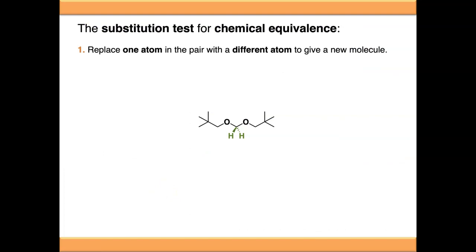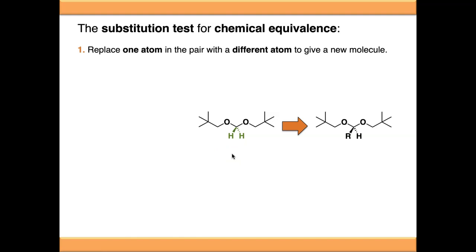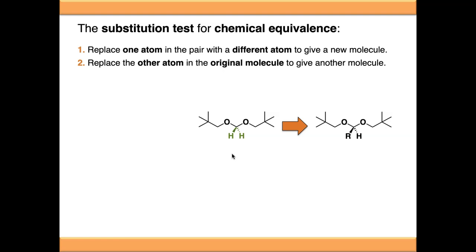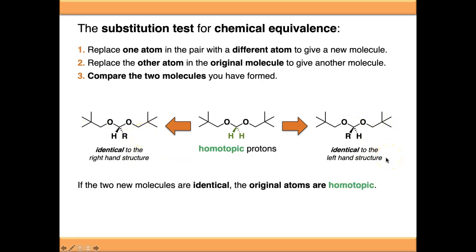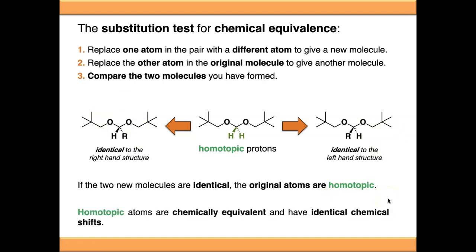If you're unsure whether a CH2 is diastereotopic, you can use the substitution test for chemical equivalence. Pick the two nuclei — hydrogens or carbons — and change one atom to something else, then do the same replacement starting from the other atom, giving two new molecules. Compare the two molecules. If they are identical (one is just rotated 180 degrees), the original atoms are homotopic. Homotopic protons are chemically equivalent — they are not diastereotopic and give a single NMR signal.